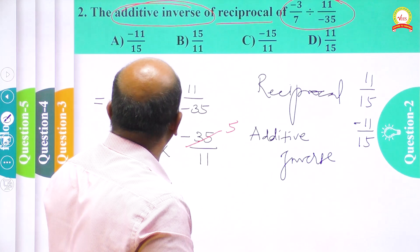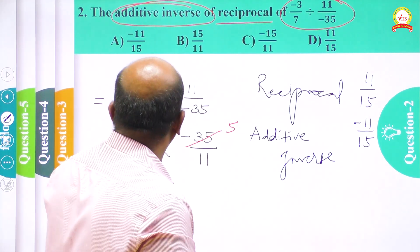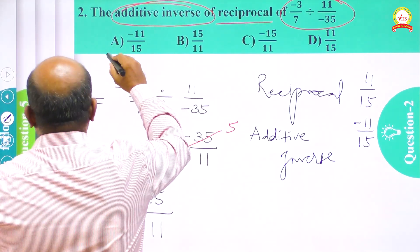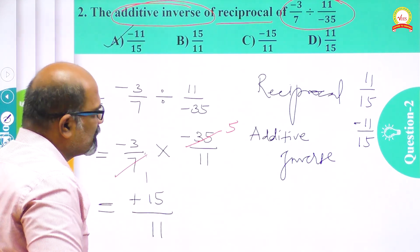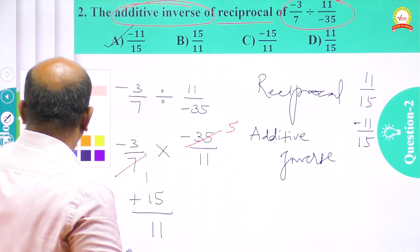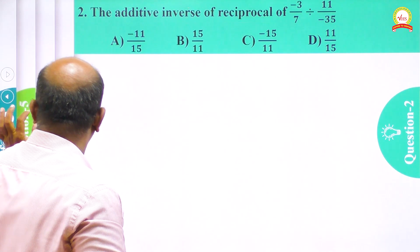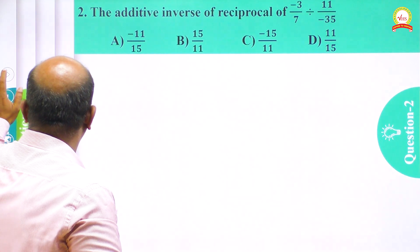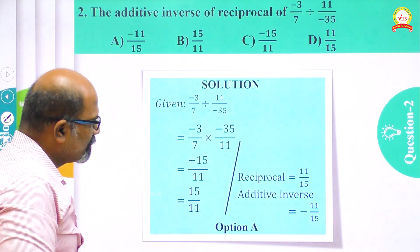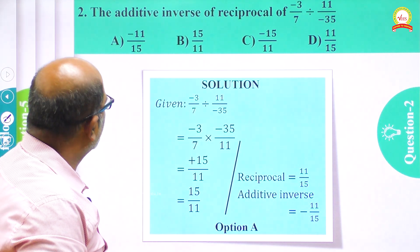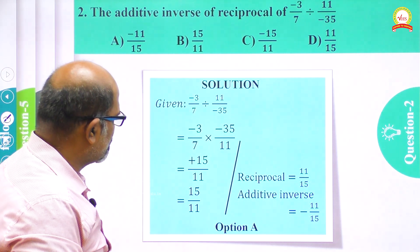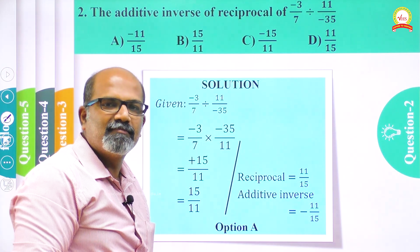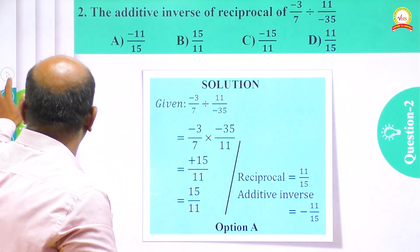The option tells us that only option A matches our answer: minus 11/15. So A must be the correct choice, and we are going to check it. Yes, minus 11/15 — option A is the correct answer. Let us move to the next question, question number 3.